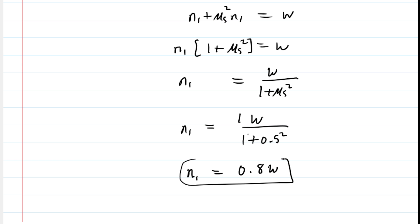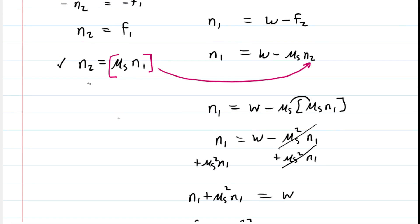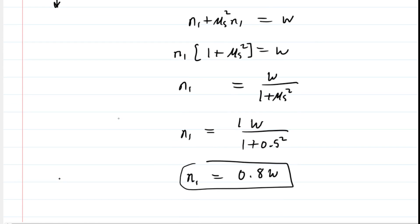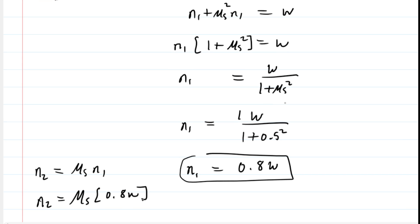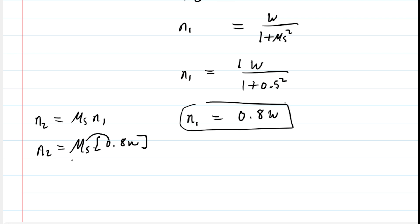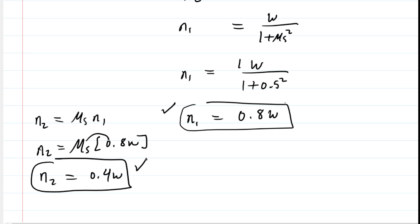That result for N1 = 0.8W we will refer to later. We also need N2, which was μs times N1. Substituting N1 = 0.8W and μs = 0.5, we get 0.5 times 0.8 = 0.4, so N2 = 0.4W. This is a lot of mathematical maneuvering, but we'll be using both results in a torque equation which we develop right now.